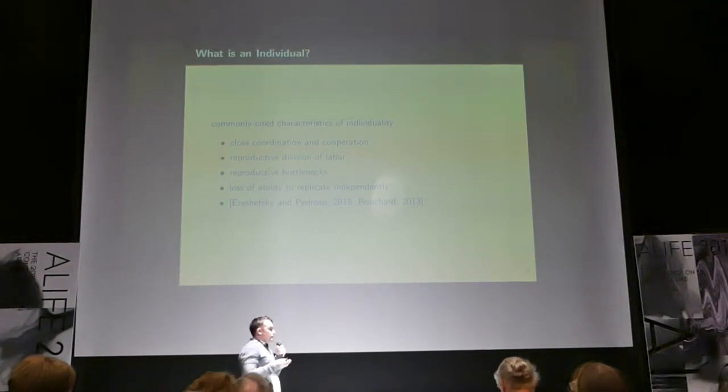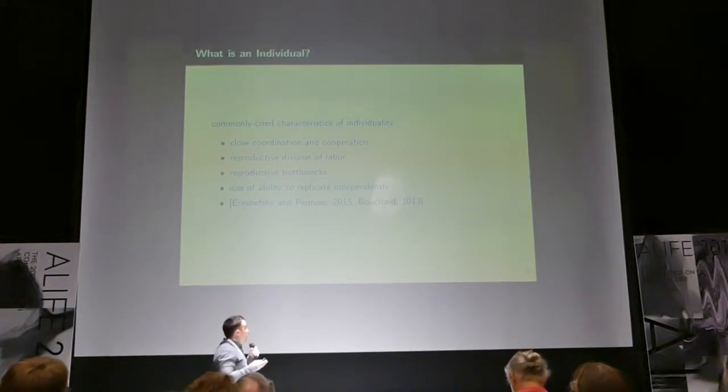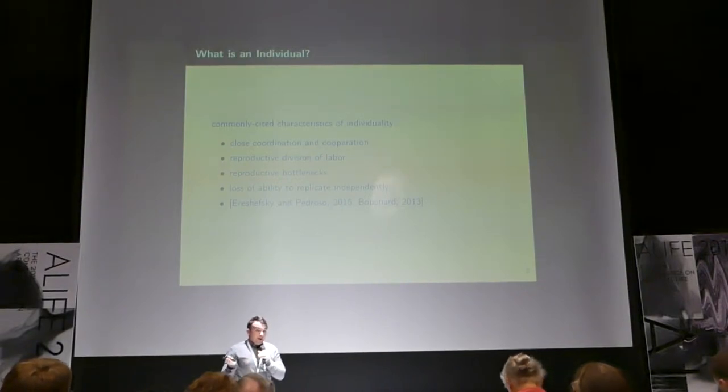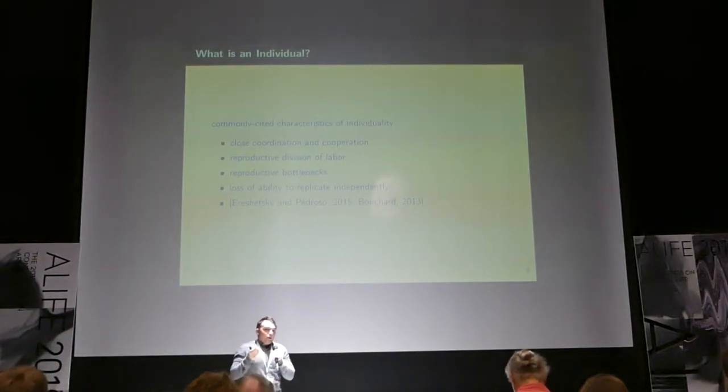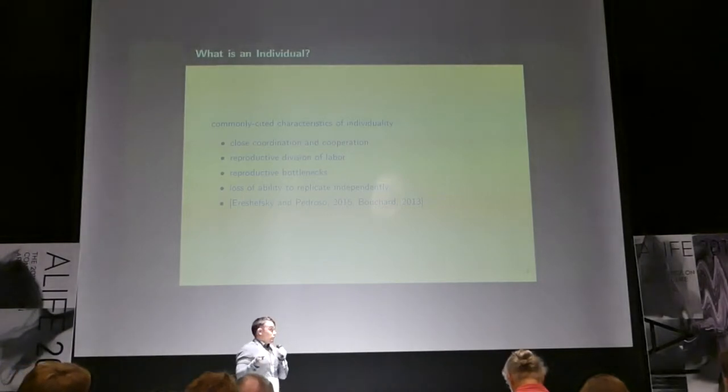In these transitions of individuality, you expect to see close coordination and cooperation between the components. You expect to see reproductive division of labor and reproductive bottlenecks. You can kind of think of this like the distinction between germline and somatic cells. And, importantly, you also see the loss of the ability to survive and replicate independently.